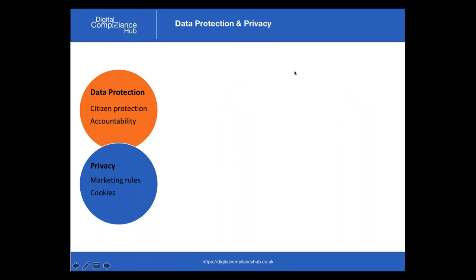In terms of where things sit at the moment with data protection and privacy: right now we have the Data Protection Act, which sets out what we can and can't do with data relating to UK citizens. And we have the Privacy and Electronic Communication Regulations, or PECA, which set out the rules relating to privacy — specifically about marketing using electronic communications and cookies.